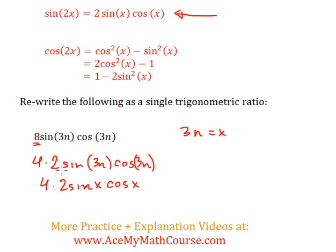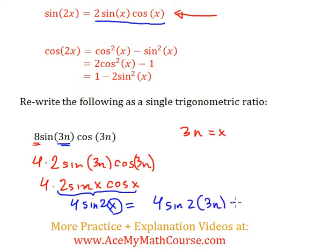And at this point I can actually just say, okay, well, I have 2 sin x cos x. That is the same thing as sin 2x. So this is just sin 2x. But remember that in our original question we didn't have an x, we just had 3n. So I'm going to plug in the 3n right here. So we're going to have 4 sin 2 times 3n, which would give us 4 sin 6n. And that's it.